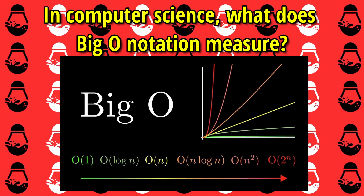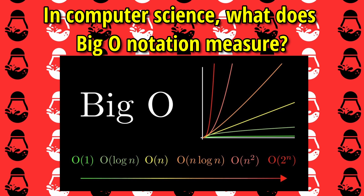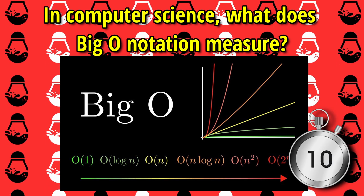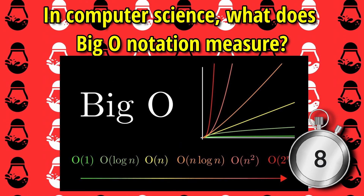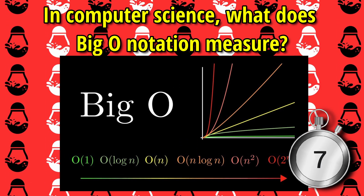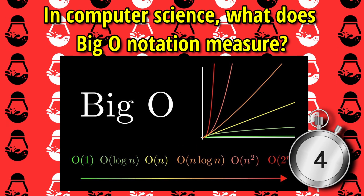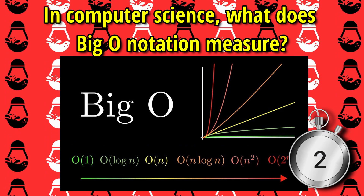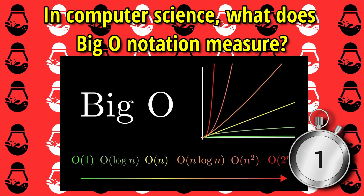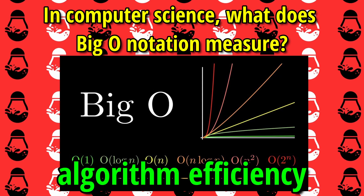Next round. In computer science, what does big O notation measure? The answer is algorithm efficiency.